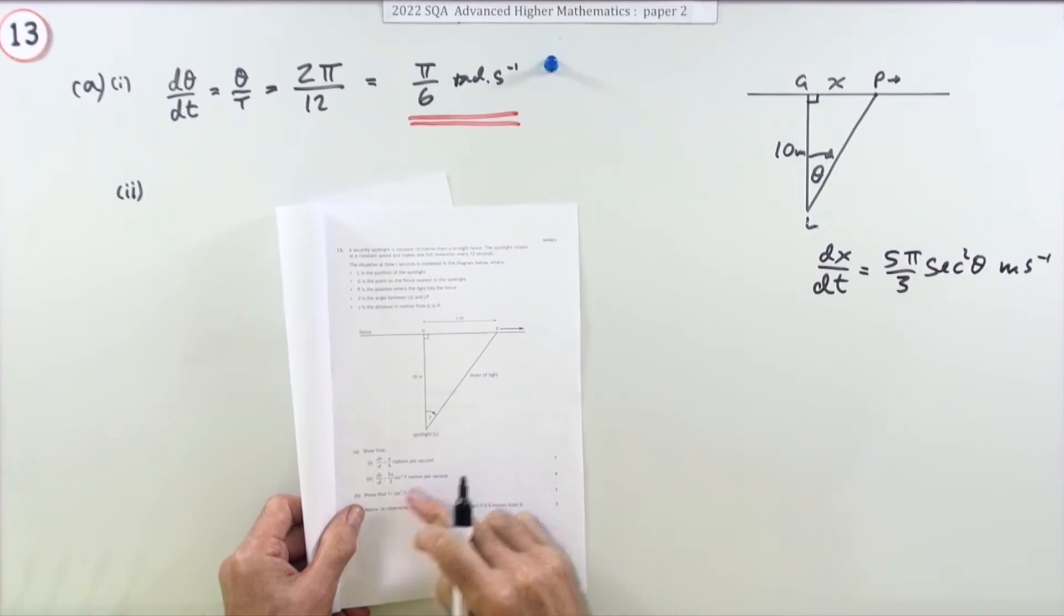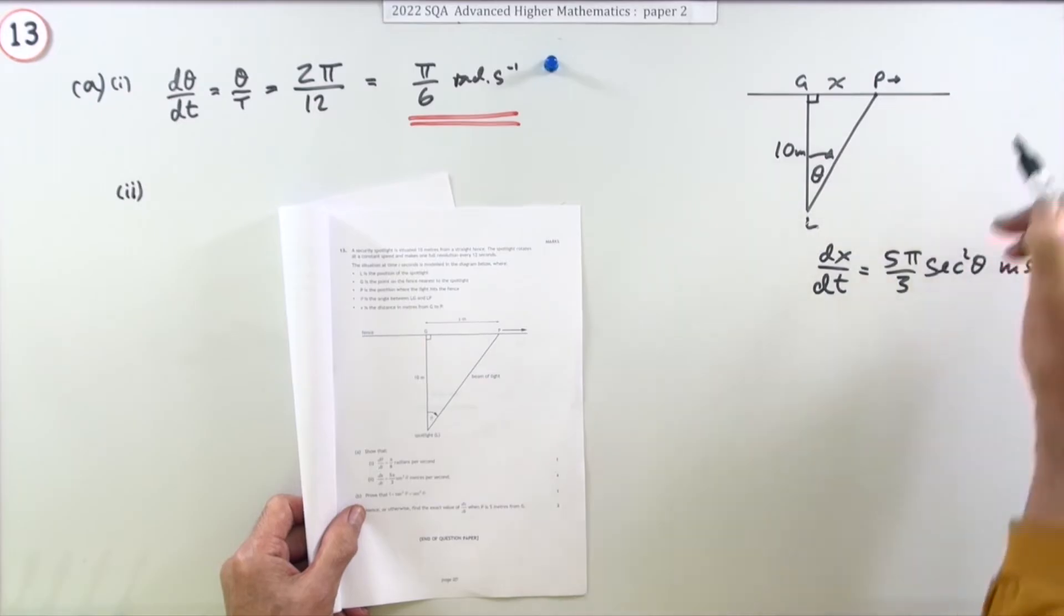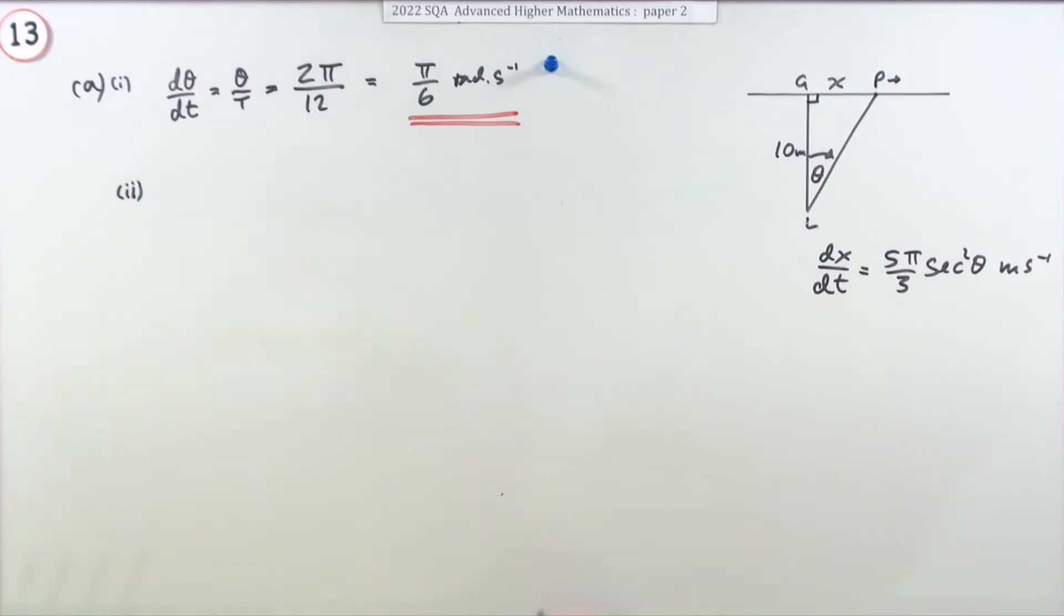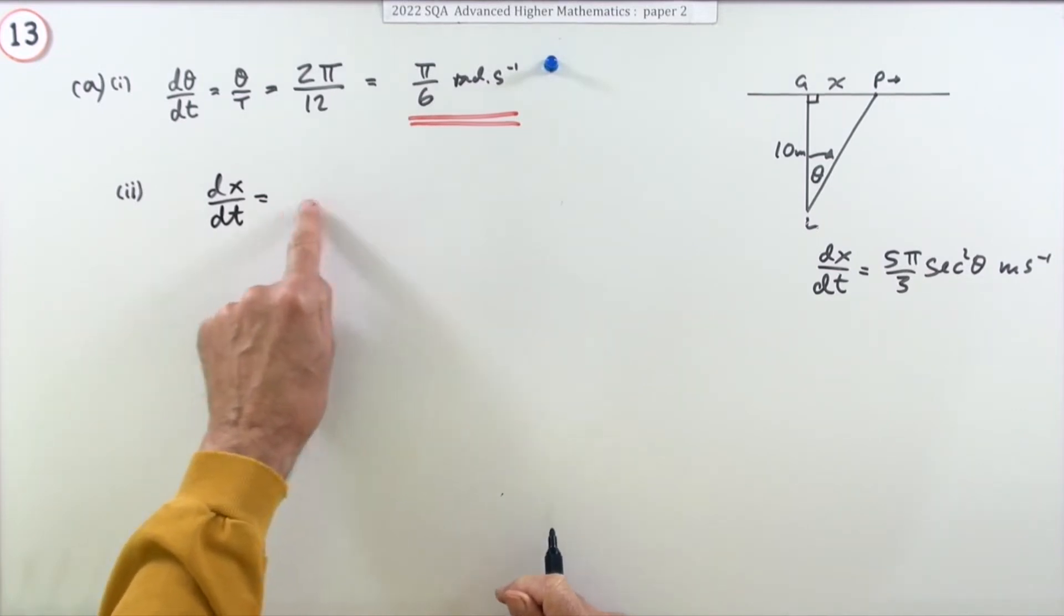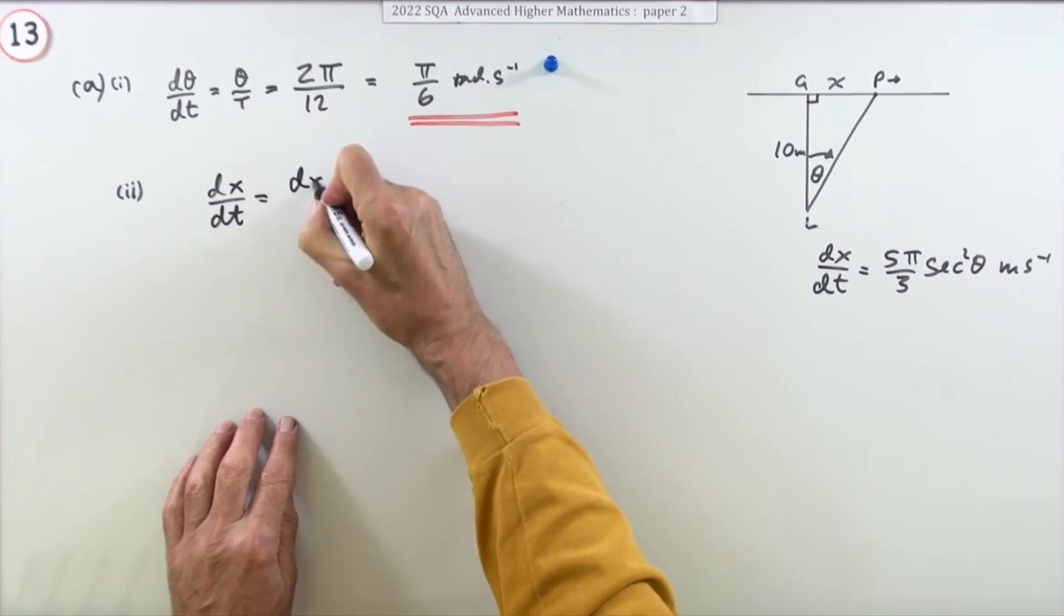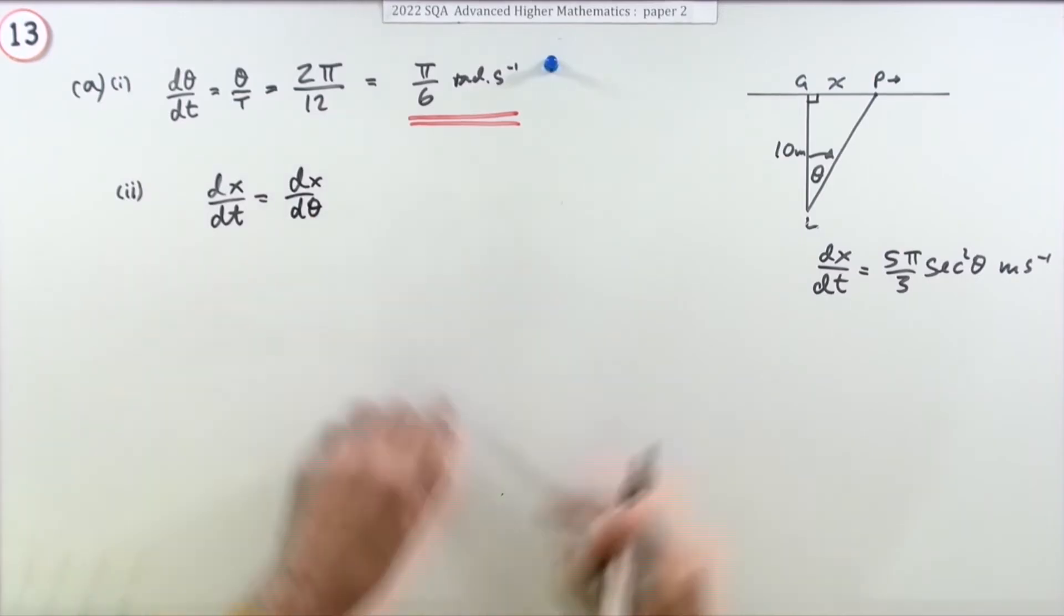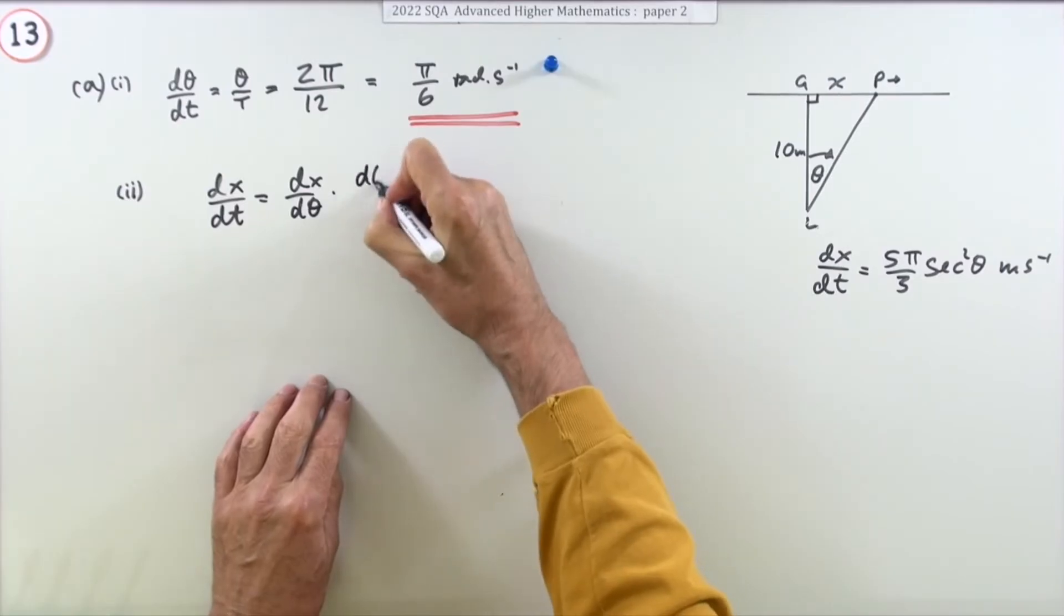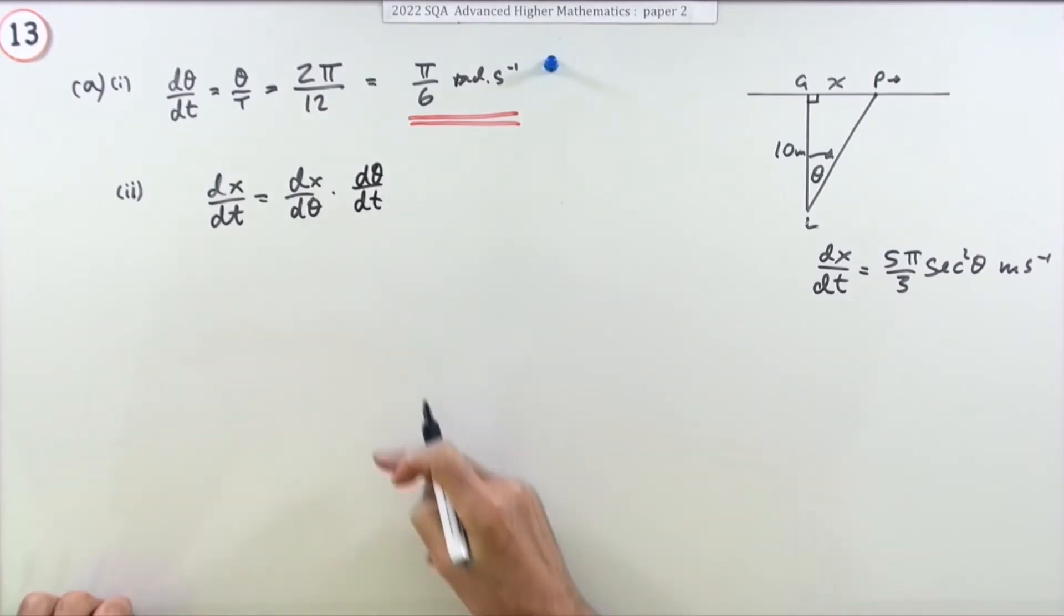Now part two: show that dx/dt, that is the speed of this spot, which is going to change of course, is given by this expression for marks. Well if you want dx/dt, then just form an appropriate chain rule that will construct it. So you could get dx/dt if you had dx/dθ, given that you know a connection between x and theta, and you do from this triangle here, there's a simple trigonometrical connection, and then multiplying that by dθ/dt, which you already know. Now stating that gets a mark.